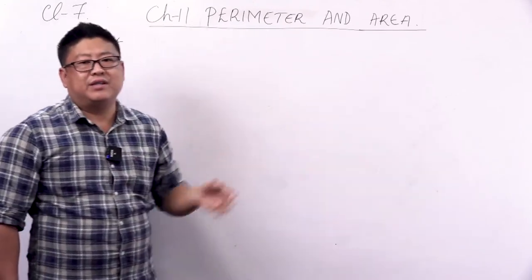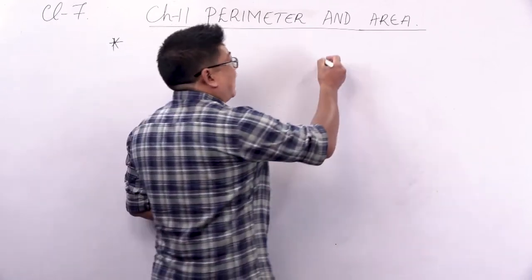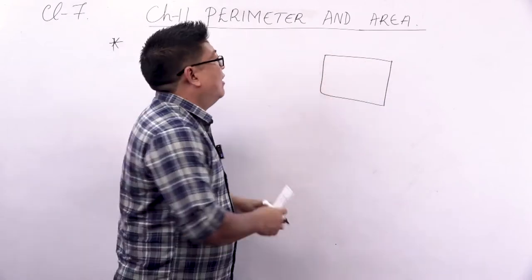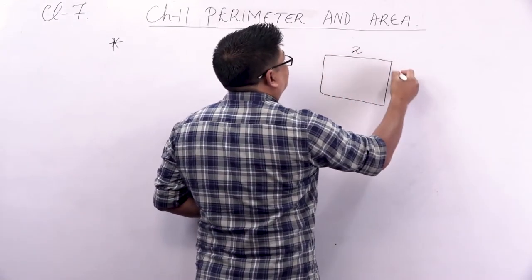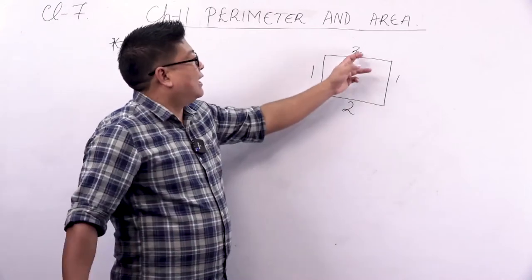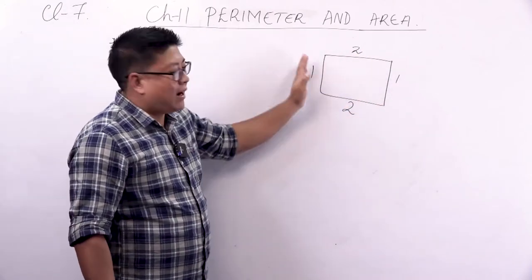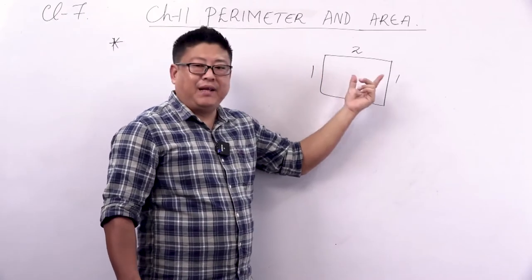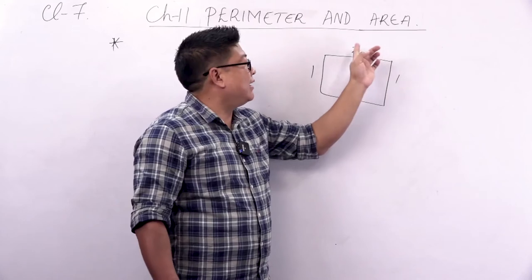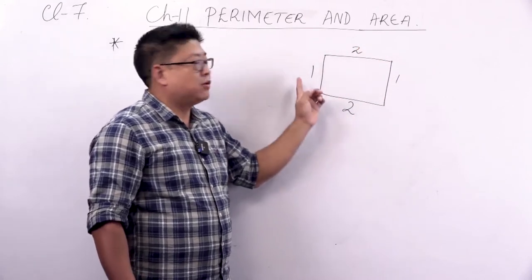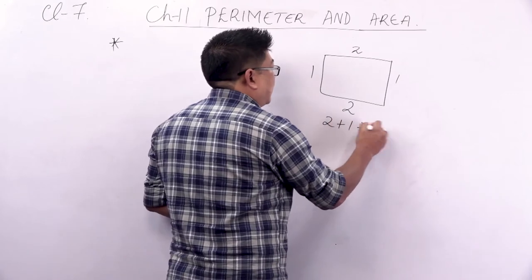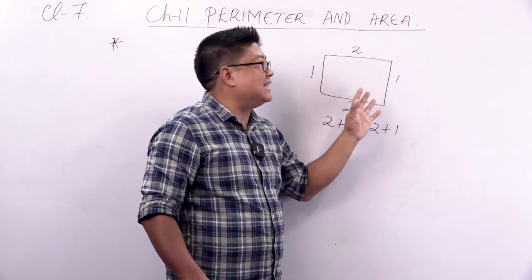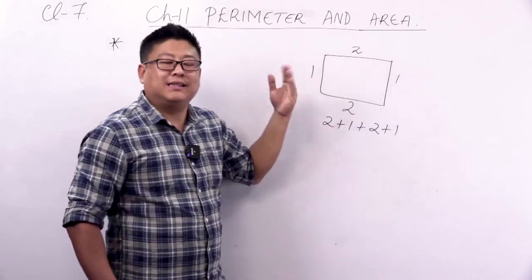Perimeter is simply the addition of all the sides, or we can say the total length of all the sides. Let's say we have a rectangle with length 2 and breadth 1. When you are asked to find the perimeter of this rectangle, we simply add all the sides: 2 plus 1 plus 2 plus 1. This is the basic concept of perimeter — it is the addition of all the sides.